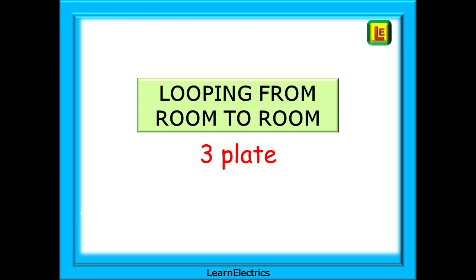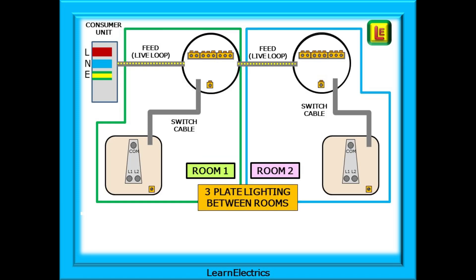If we are looping from one room to another with a three-plate system, here we have shown a three-plate lighting circuit extended between two rooms. The feed cable — the live loop — now travels from ceiling rose to ceiling rose, and the switches in each room have no connection between each other. We have kept it simple by using single-gang, one-way switching in this video. In another video, we will look at two-way and intermediate switching for two-plate and three-plate systems.